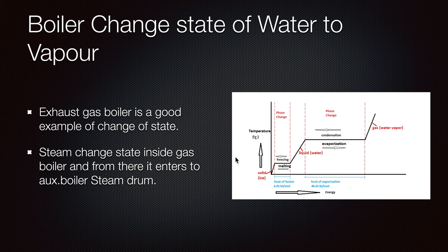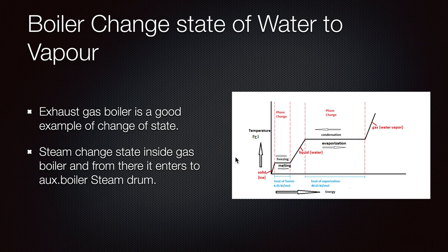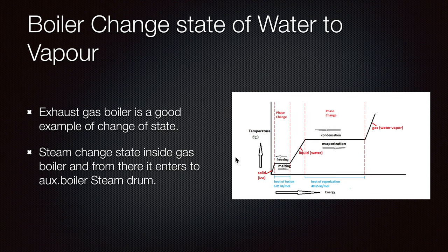The exhaust gas boiler is a good example of a change of state. If you look at the inlet and outlet temperature, you can see that the inlet temperature of the water supplied there is actually higher than the outlet. You might think the exhaust gas boiler works as a cooler, but that's not the case — all the energy it gives to the hot water is used to change its state. So it enters as liquid, but when it exits the exhaust gas boiler it is already steam.